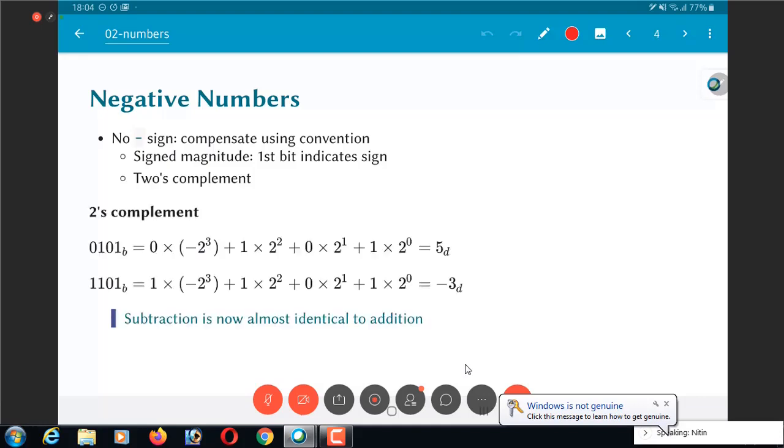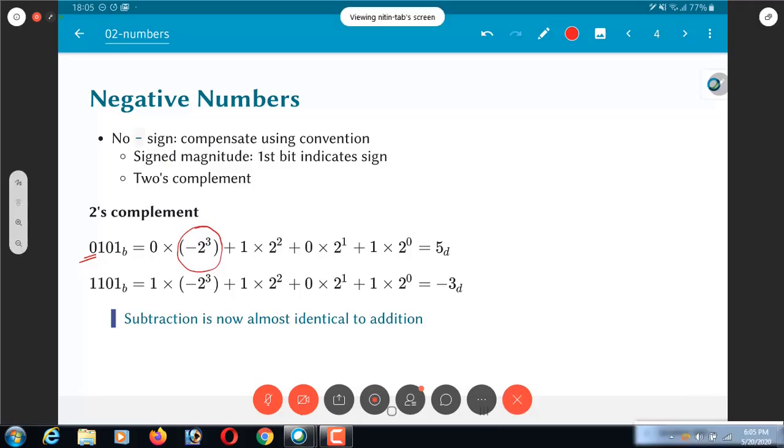In 2's complement, what we say is that the most significant bit, I will basically multiply it by a negative place value. So it looks exactly the same as the numbers that we had earlier, it is just that the most significant bit alone, its place value is a negative value.